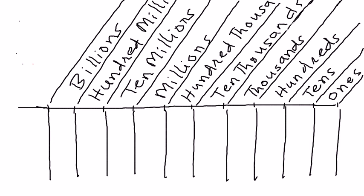Starting from the right, we start with the ones, then the tens, then the hundreds, then the thousands, ten thousands, hundred thousands, million, ten million, hundred million, billion, ten billion, hundred billion, trillion, and so on.